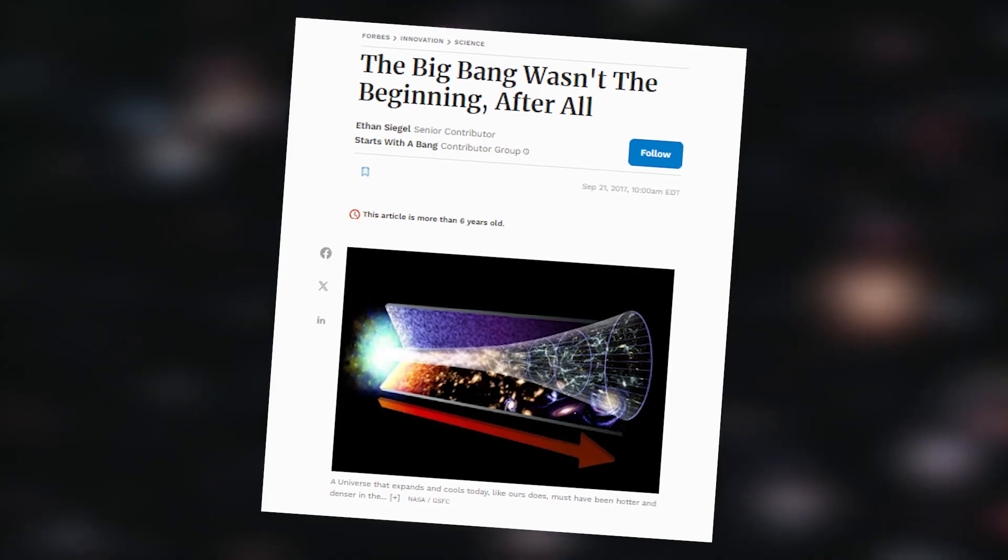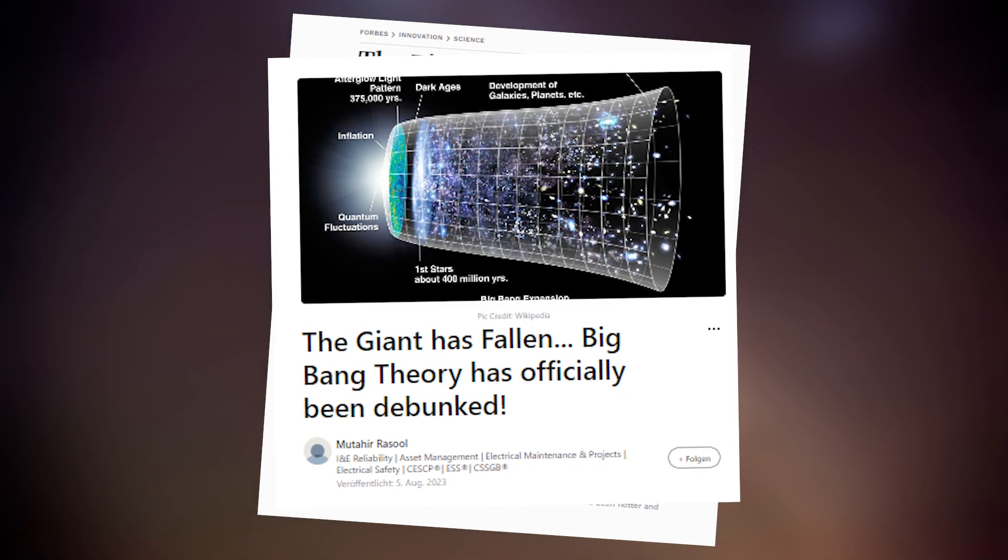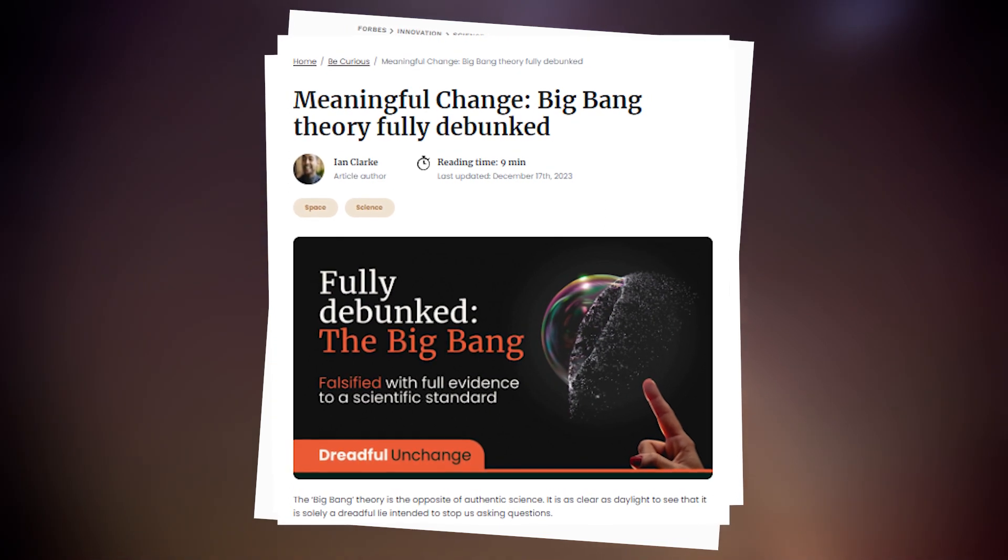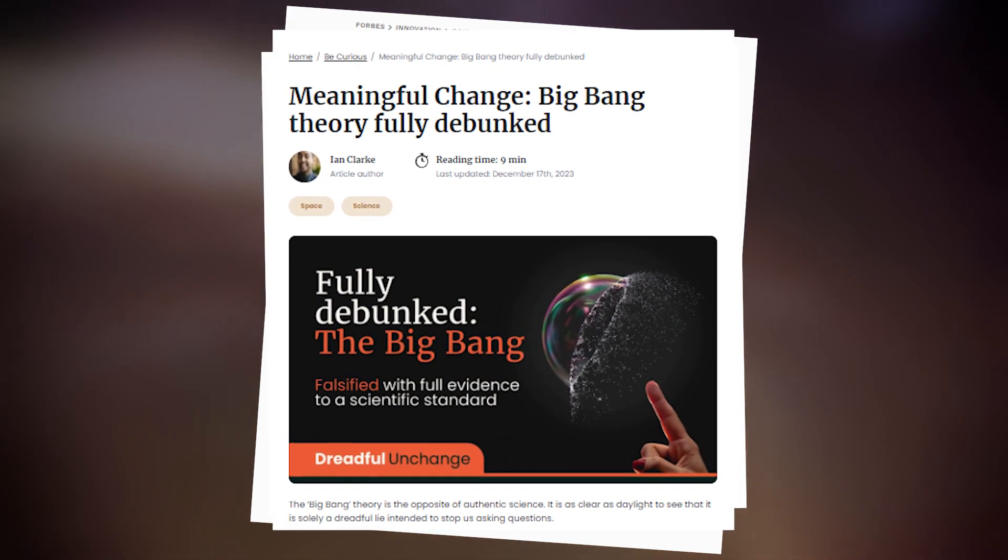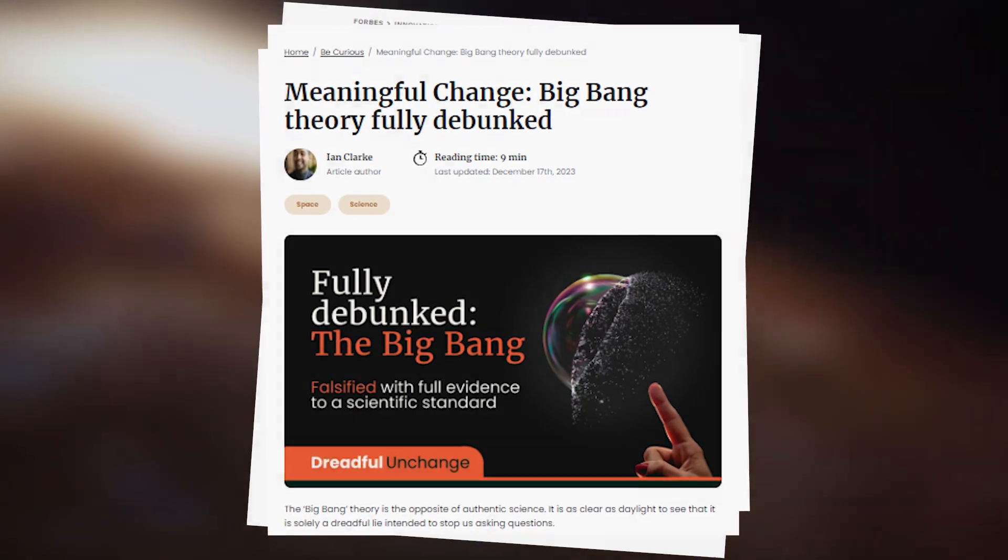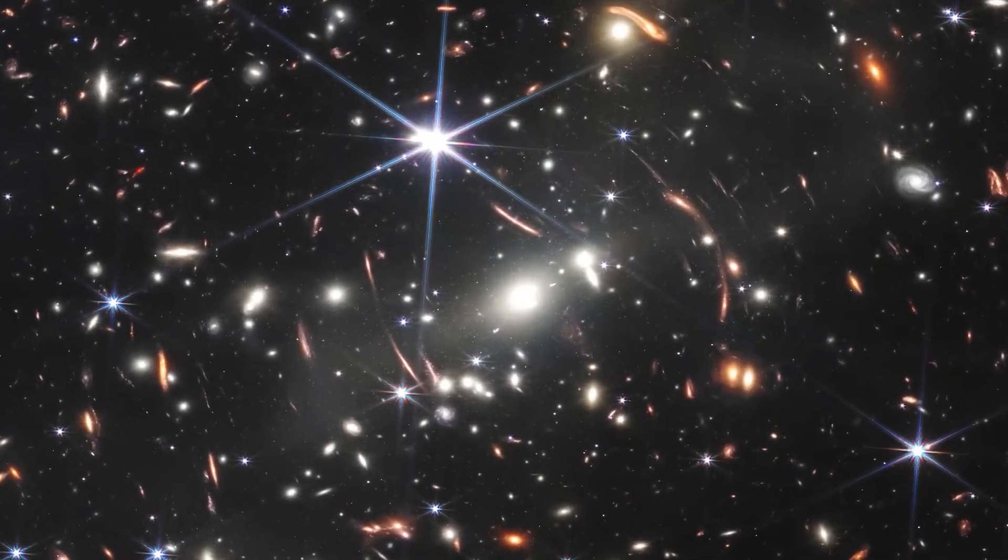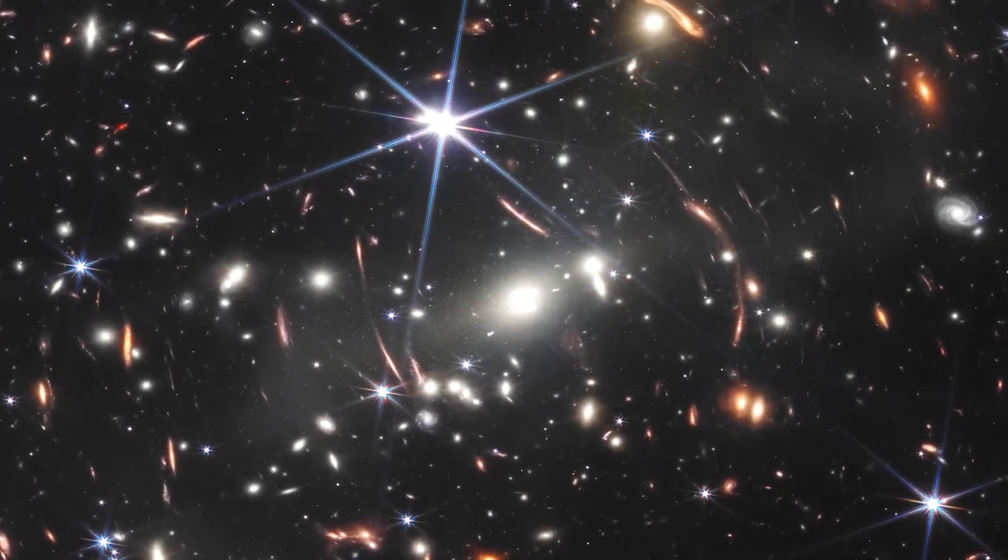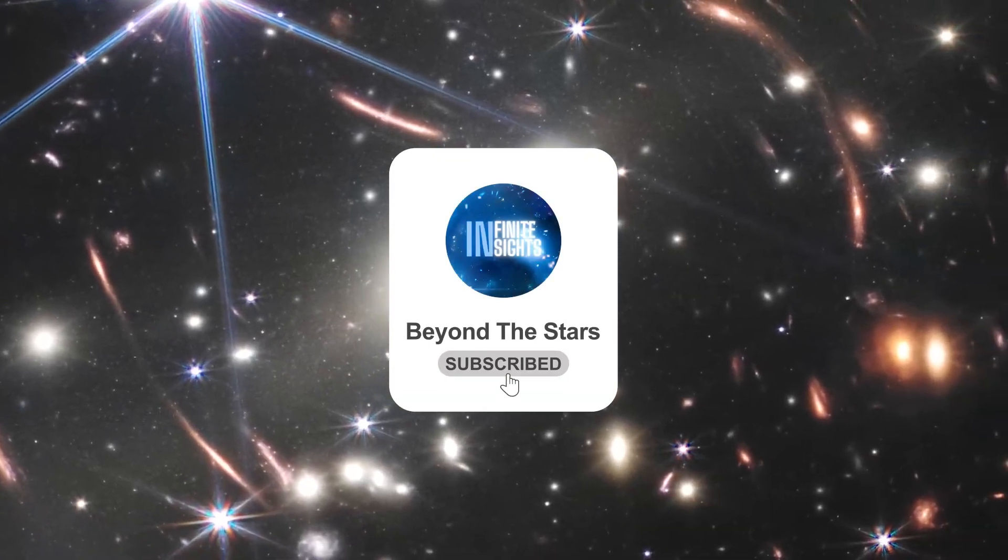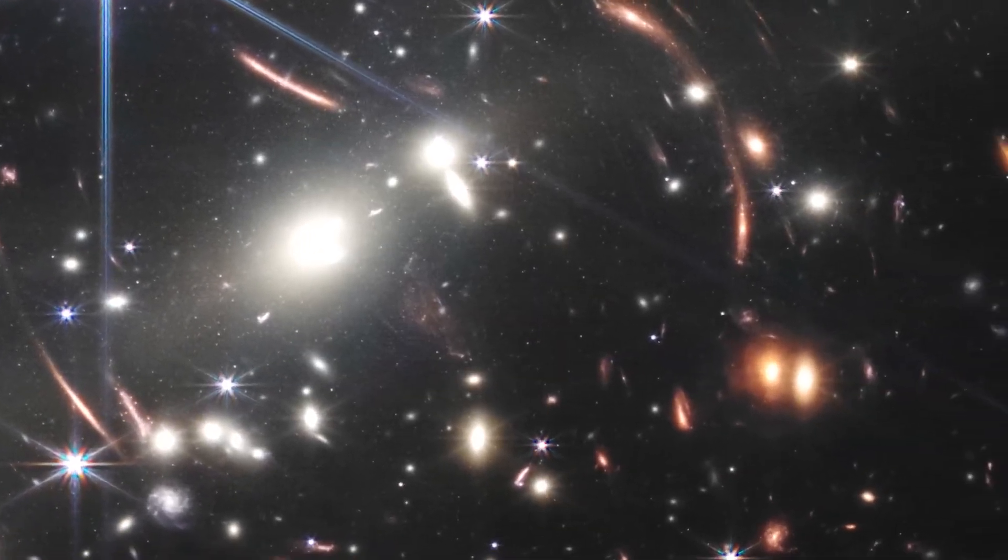However, popular science publications on the James Webb Telescope photographs claim that the Big Bang never happened, thus generating panic among cosmologists. How do these images suggest the inaccuracy of the Big Bang Theory? Let's decipher the evidence presented by the telescope itself to clear up any doubts.